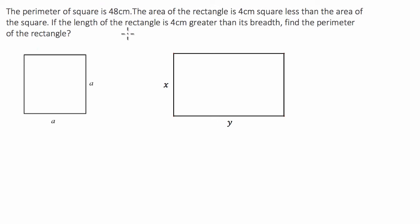What I'm going to do is write the information that we're given in the question in a more easily accessible or easy to understand manner. First of all, I'm going to say that the perimeter of the square is 48 centimeters. So let's just write that down. We've got the perimeter of the square is equal to 48 centimeters.